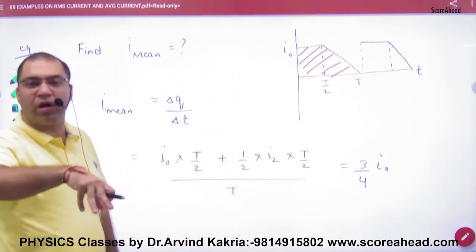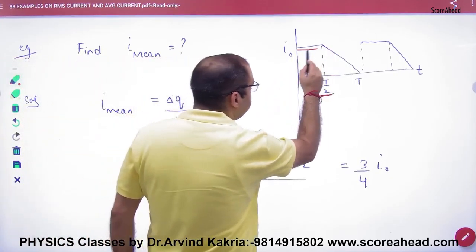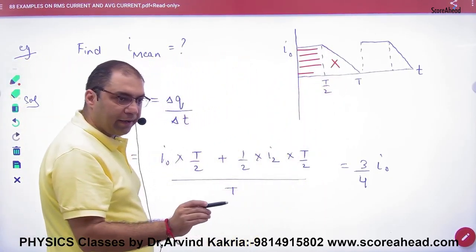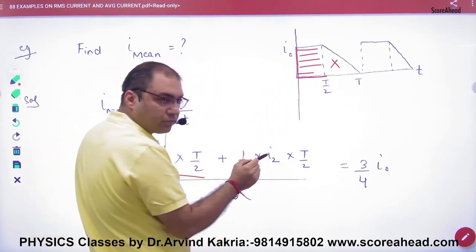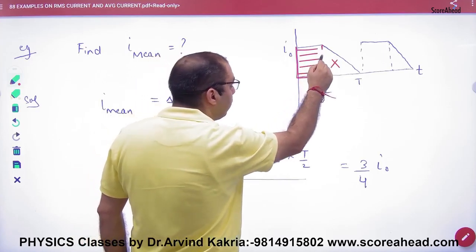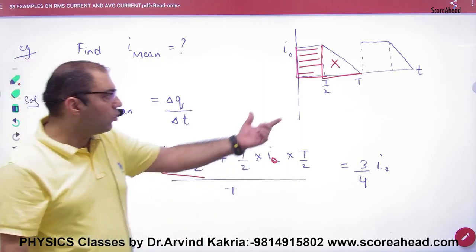It is a graph. Because the graph is current and time. Then what will happen? Under the area will be total charge. So how do you create the area? Area of rectangle plus triangle area, so rectangle area i₀ into t by 2 and triangle half into i₀ into t by 2.